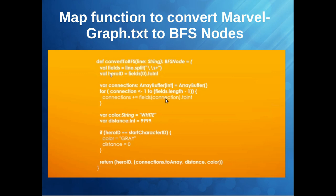Let's say we want to find the degree of separation from Spider-Man. If the line we're processing matches our start character ID, we update that node's color to gray and distance to zero — because the degree of separation from Spider-Man to Spider-Man is zero. Finally we return the BFS node as: hero ID, connections.toArray (converting from mutable ArrayBuffer to immutable array), distance, and color.